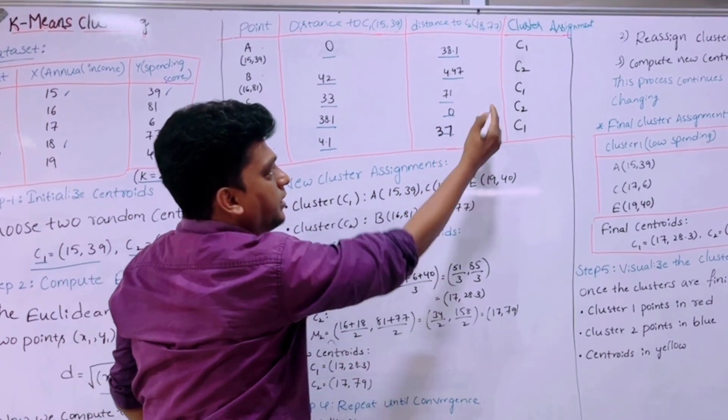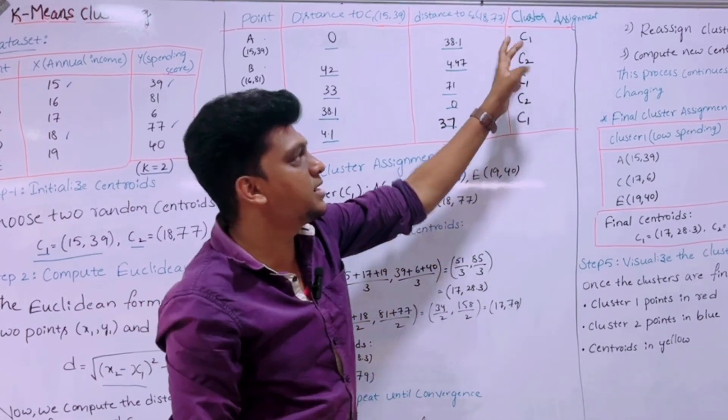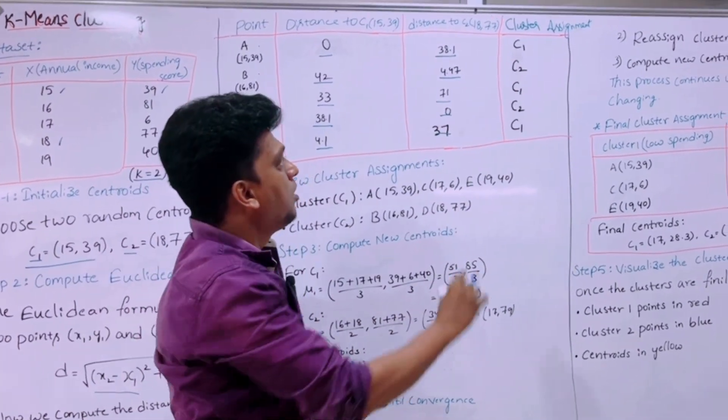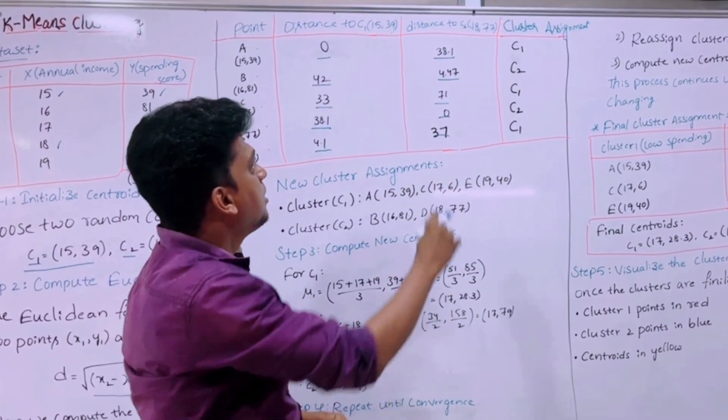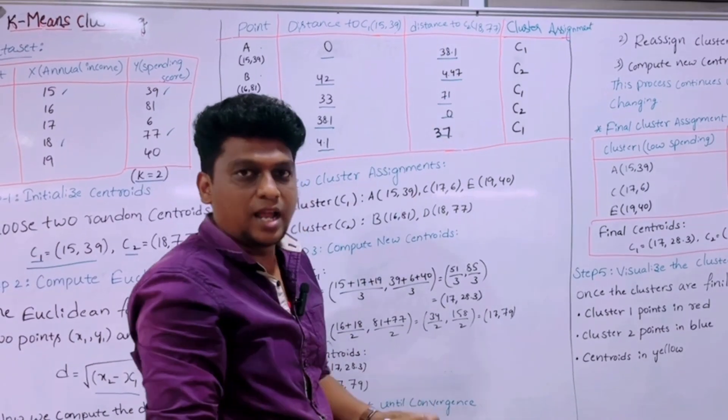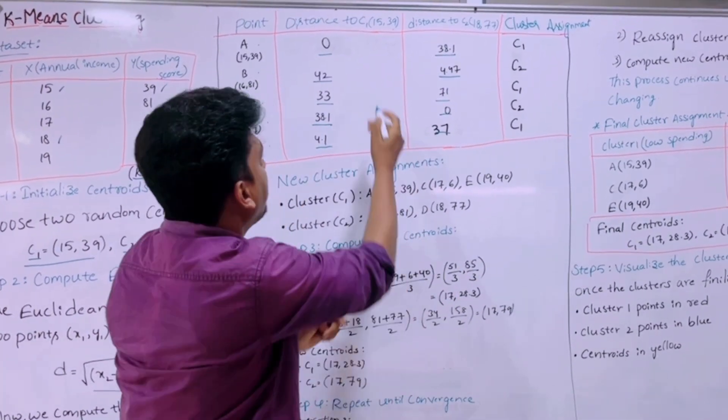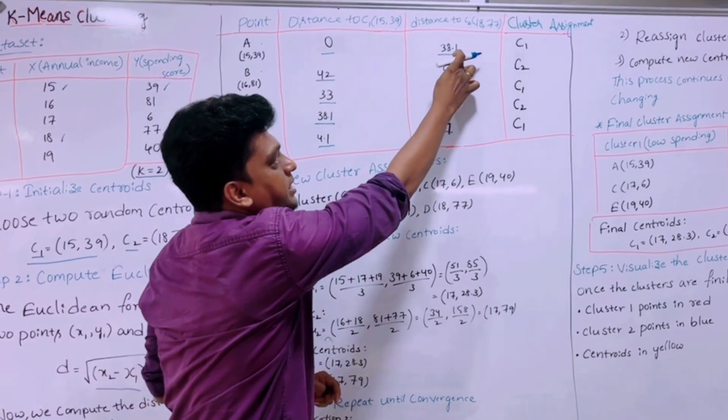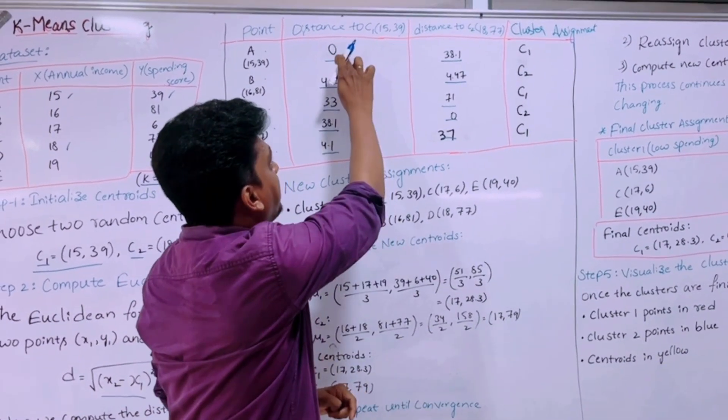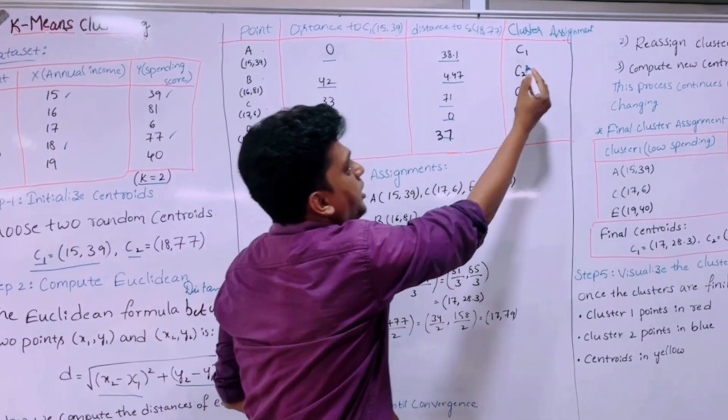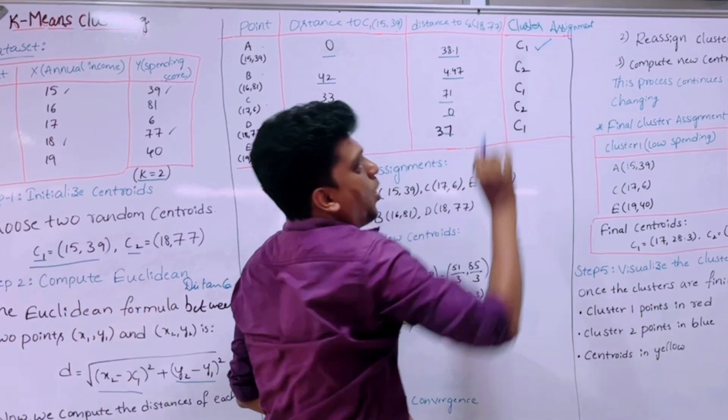Now in the last column it is the cluster assignment column. So how we are assigning the clusters? We should compare the distance and which distance is very less, we should allot that cluster. So here it is 0 and it is 38.1, so it is having the minimum distance, so it should be taken as C1.